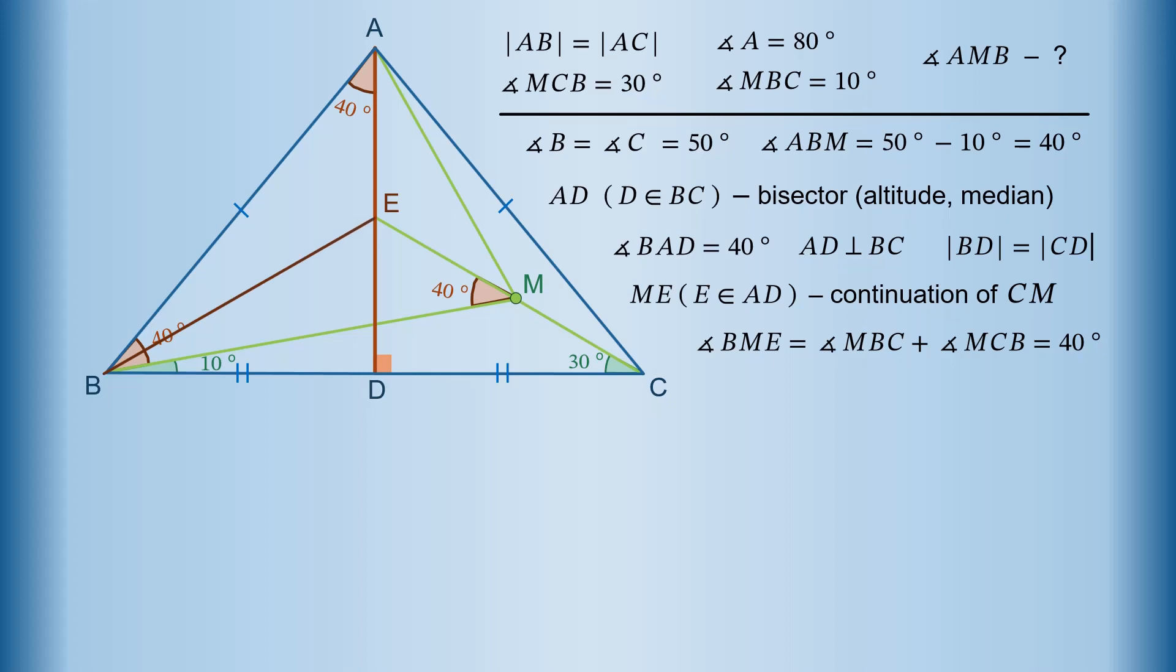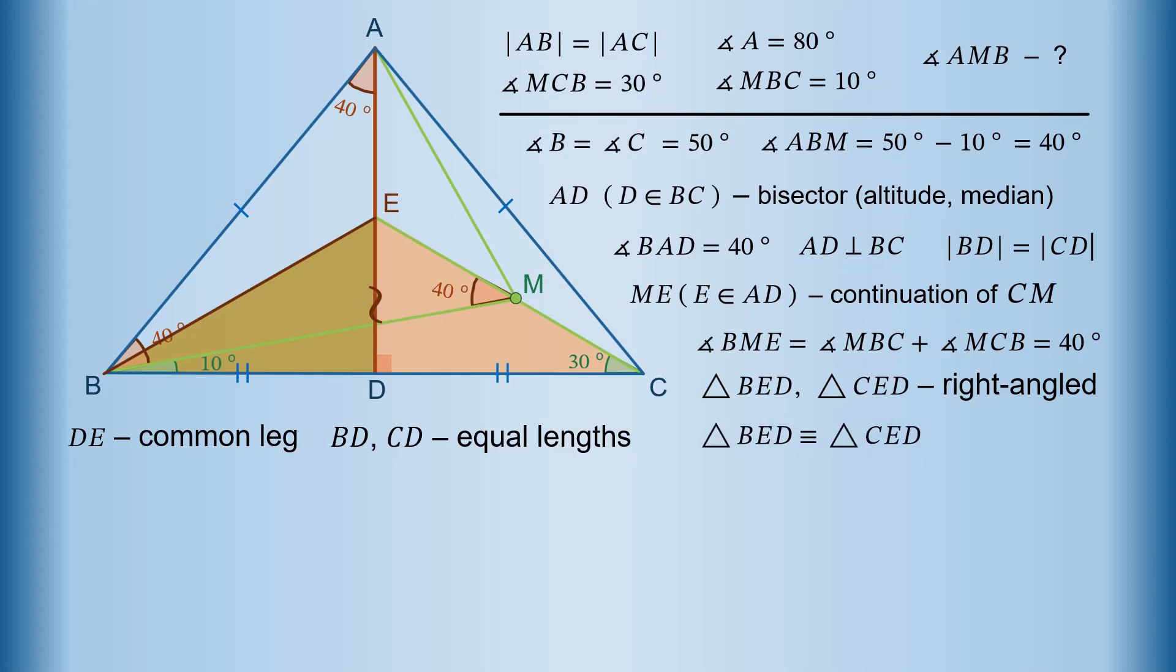Consider two right-angled triangles: triangle BED and triangle CED. We can say straight away that the triangles are equal because of the symmetry above AD. For someone who is not convinced with the symmetry, it can be observed that the triangles have common leg DE, while the other legs BD and CD are equal in length. Therefore, the triangles BED and CED are equal or congruent, whichever term you prefer.